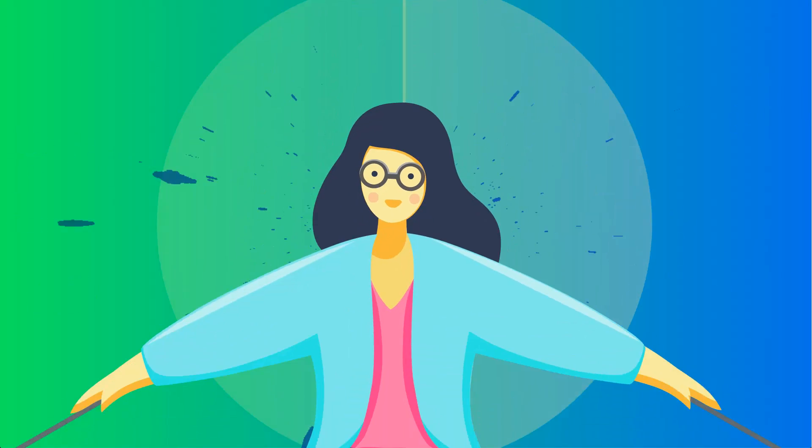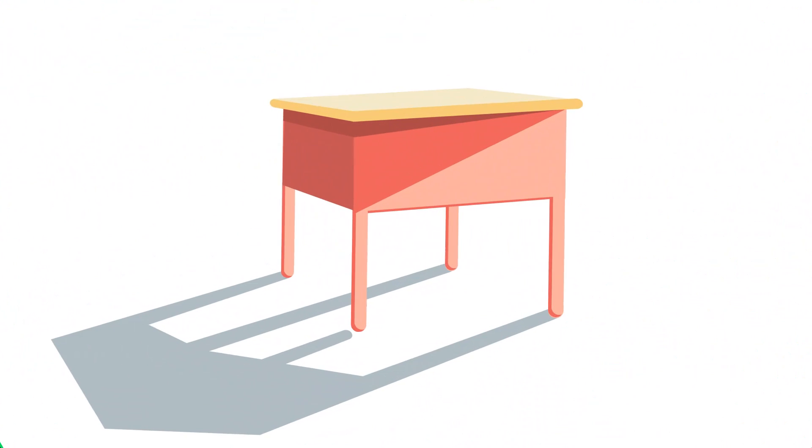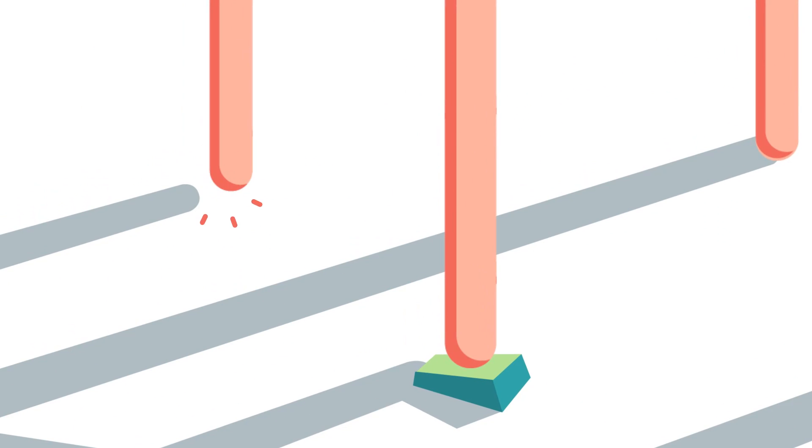Any school teacher would agree that managing a class is a balancing act. Like that wobbly table that refuses to even out. When you try and level one end, the other falls short.